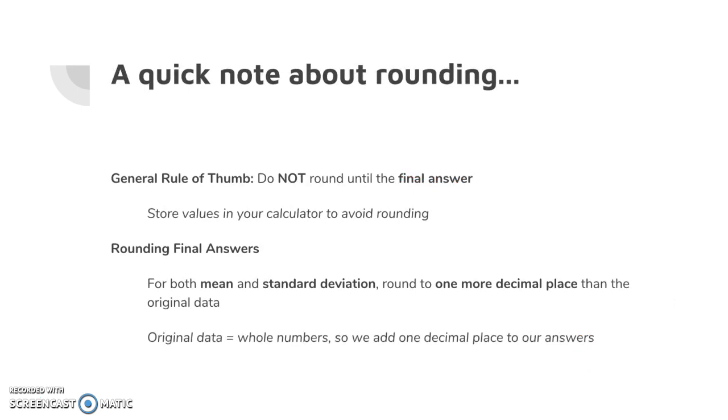Quick note about rounding. I don't know if my class is different than other classes, but if you're in my class, general rule of thumb: do not ever round until you get to the final answer. You're going to need to find a way to store values in your calculator to avoid rounding. The other thing is you're going to want to round the final answer only. So how much do you round it? Well, typically what we do is we say whatever number I give you, you're going to go one more decimal place than the original data. So in this case, I gave you five numbers that were whole numbers, so no decimals, so we added one decimal for the standard deviation.